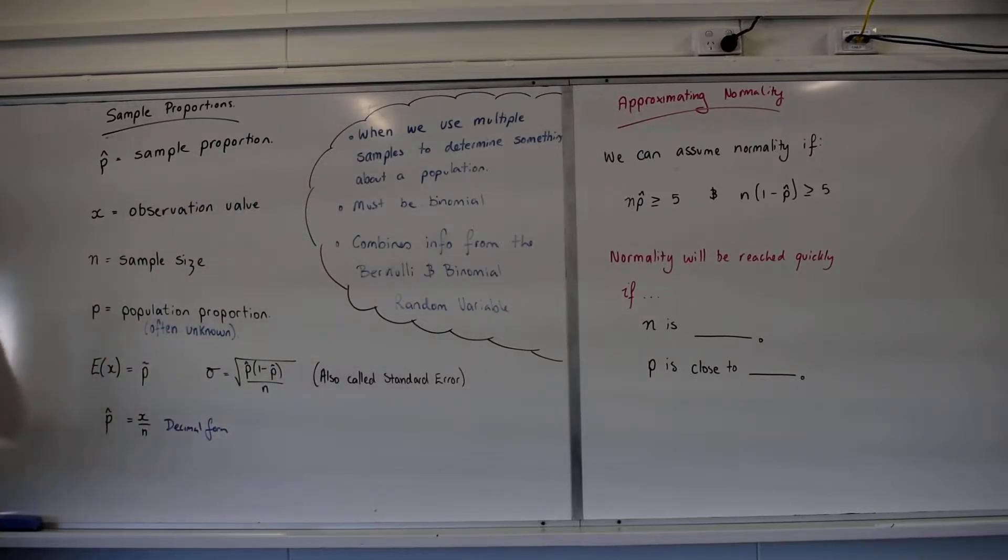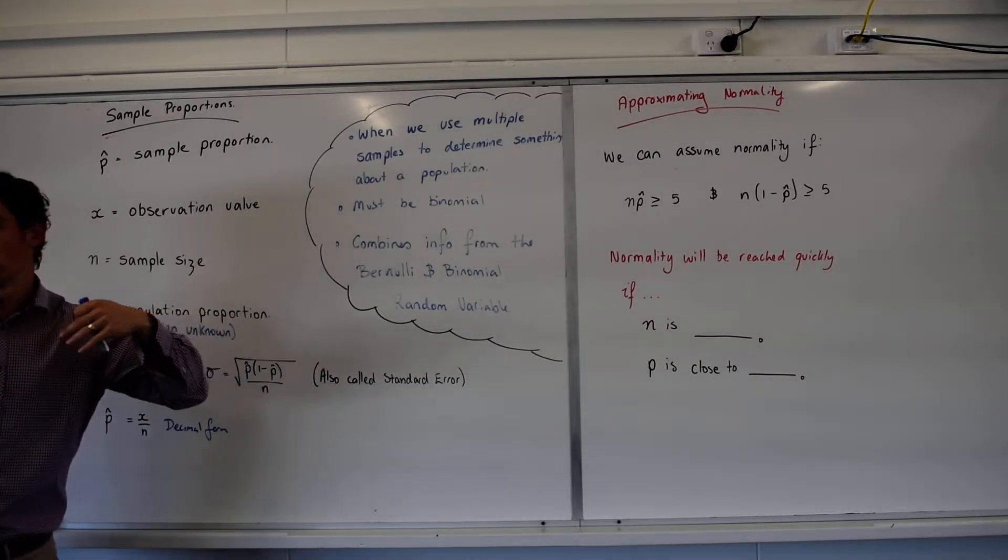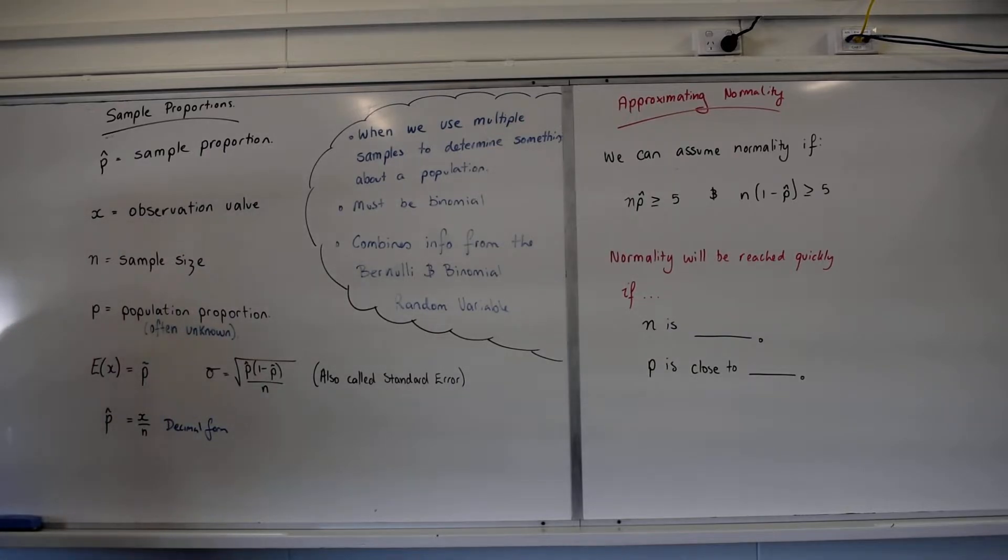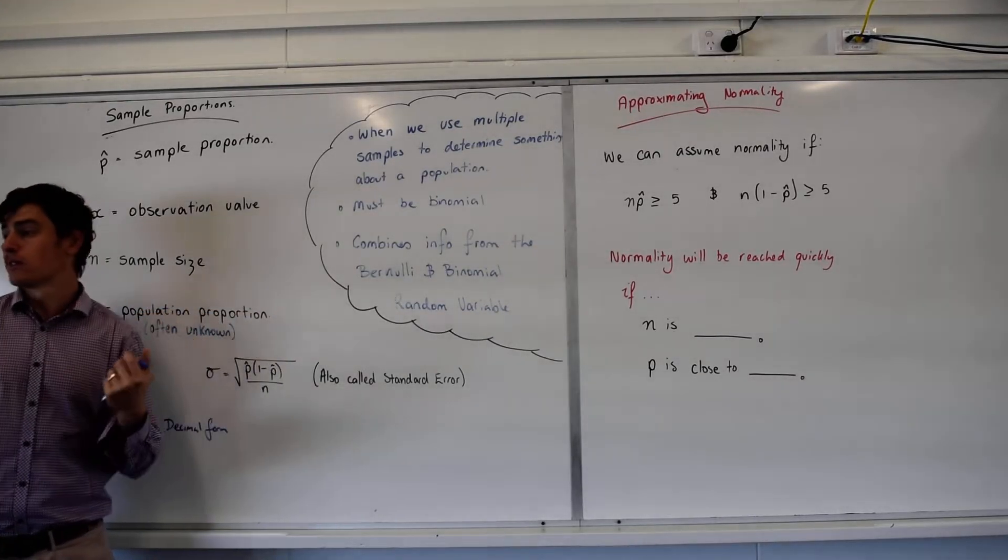So that's our P hat, and that is a representation of our population proportion, which is given by P. That is just saying what's the actual value of the proportion, what's the actual proportion of the population that does support Queensland? And the only way to find the population proportion is to do a census.